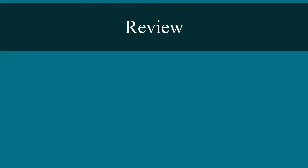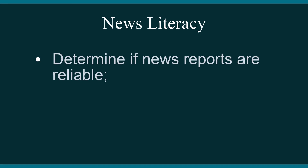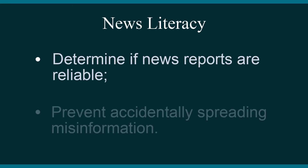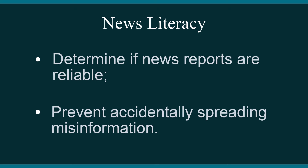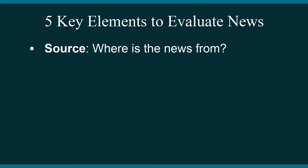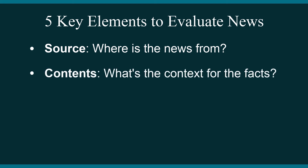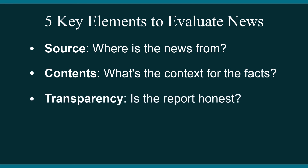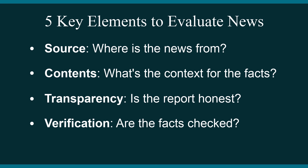Now let's review what we've learned. News literacy is a critical skill that helps us determine if news reports are reliable and prevents us from accidentally spreading misinformation. There are five key elements to consider when evaluating news reports: Source – Where is the news from? Content – What's the context for the facts? Transparency – Is the report honest? Verification – Are the facts checked? Bias – Is the report fair?